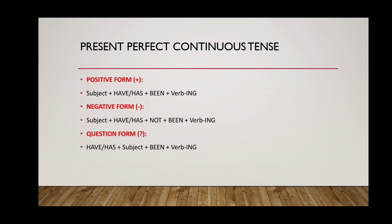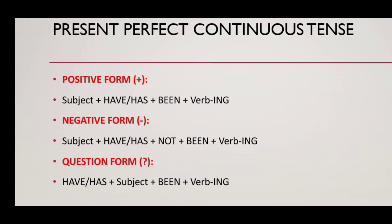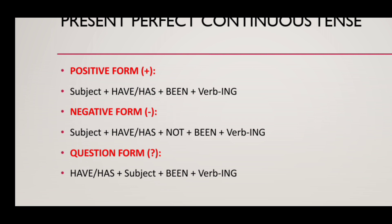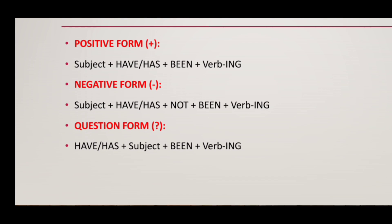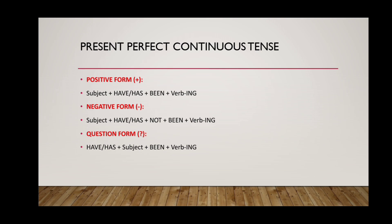Now the fourth one is present perfect continuous tense. As the name suggests, both perfect and continuous are there, so in the structure, have or has as well as verb plus ing will both be present. The structure is: subject plus have or has plus been plus verb plus ing plus object. For negative form: subject plus have or has plus not plus been plus verb plus ing plus object. For question form: have or has plus subject plus been plus verb plus ing. That is the structure of present perfect continuous tense.